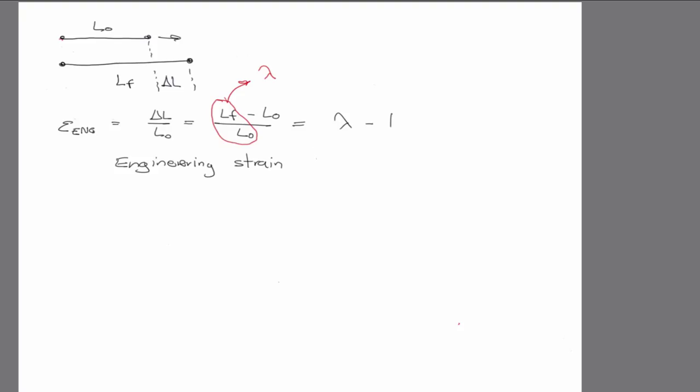So this is sort of what's called the engineering strain. Sometimes you'll hear this called the Lagrangian strain. So this is the strain that's easiest to measure in the laboratory. We typically have a sample, and we take out a ruler, and we know how long it is, and then we deform it, and measure the final length, and compute this, right?